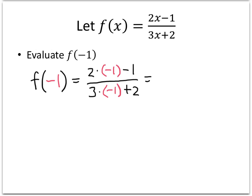So now what do we have? On the top, we have 2 times negative 1 is negative 2, minus 1. And then at the bottom, 3 times negative 1 is negative 3, plus 2. Let's do these step by step.